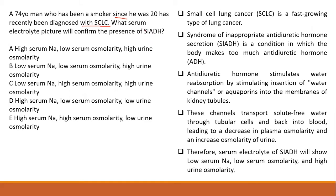In syndrome of inappropriate ADH, there is high production of ADH. The mechanism of ADH is to reabsorb water into the blood. When there is reabsorption of water, the osmolarity in the blood will be reduced. Why? Because there is excretion of sodium in the urine. So urine becomes hypertonic — high urine osmolarity — and there is low sodium in the blood, resulting in low serum osmolarity.